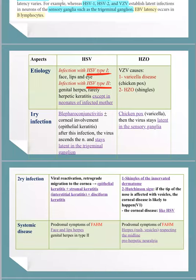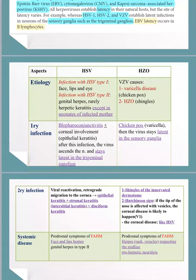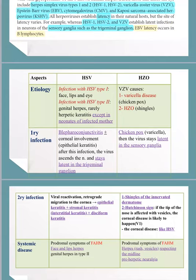Herpes simplex virus can be type 1 or type 2. Type 1 is more common in infecting the eye because type 1 is commonly present above the waist, while type 2 is below the waist. For herpes zoster ophthalmicus or shingles, the etiology is the varicella zoster virus: varicella refers to chickenpox and zoster refers to herpes zoster ophthalmicus or shingles.